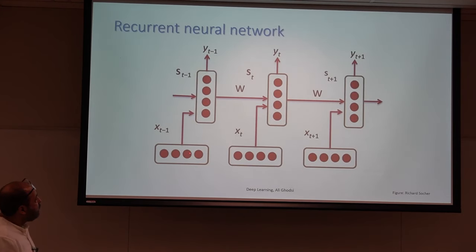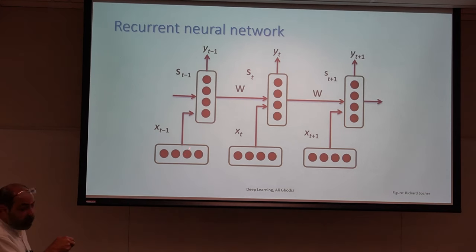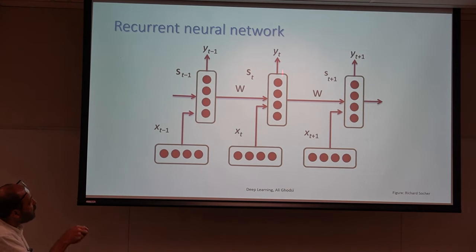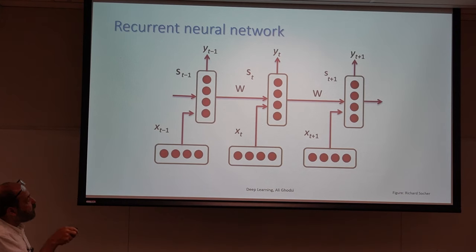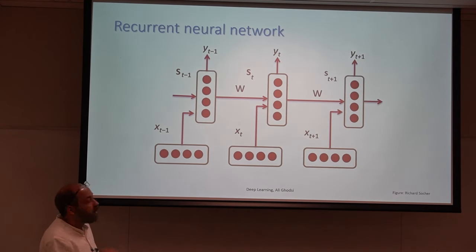We usually show RNN with this type of diagram. Think of each block as one feed-forward: this is your input, this is the hidden space, and this is the output. Another feed-forward: input, hidden space, output. Input, hidden space, output. We just make connections between these hidden spaces.